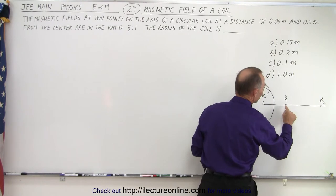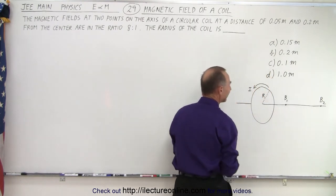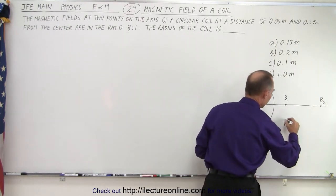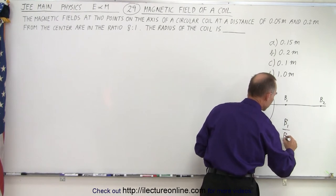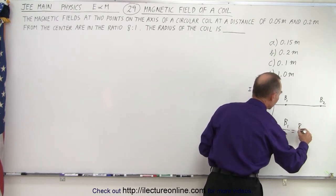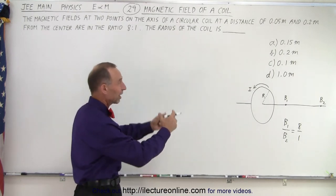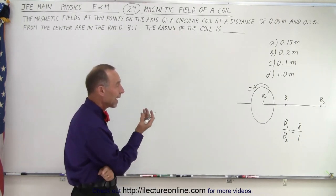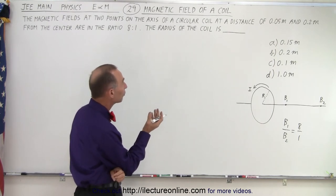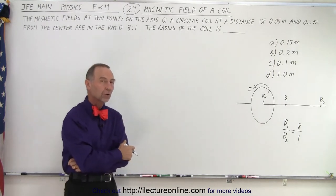We have the magnetic field strength B1 and B2 and they tell us that the ratio of B1 to B2 is equal to eight to one. Okay so let's assume that you were able to visualize what the problem looked like. Now how do you find the radius of that coil.